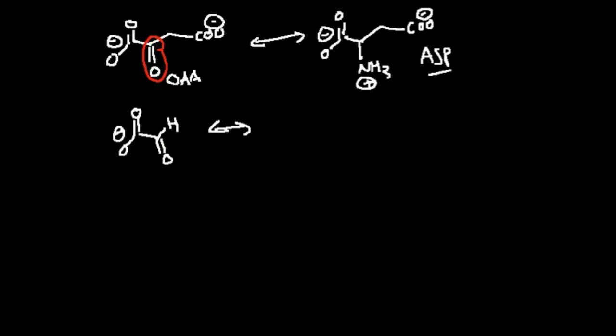What would be the product of transamination with glyoxylate? Here's the carbonyl. What would happen if I replace that with an amine? I would get glycine. If you transaminate glyoxylate, you get glycine. If you eat too much glycine, you can actually produce some glyoxylate in small quantities.